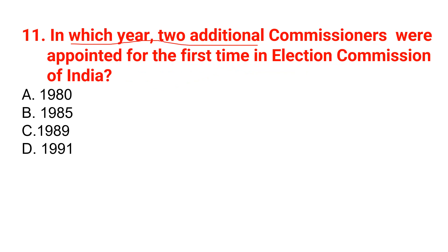In which year were two additional commissioners appointed for the first time in the Election Commission of India? Options are 1980, 1985, 1989, or 1991. The correct option is 1989. In 1989, for the first time, the Election Commission of India became a multi-member body. Prior to this, the Election Commission of India was a single-member body.